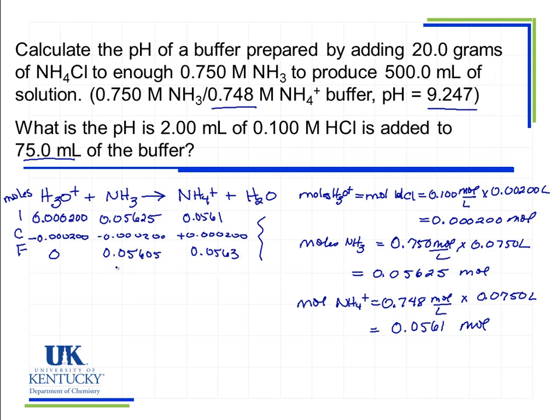Because I have a weak base, ammonia, and its conjugate acid present, I have a buffer, so the Henderson-Hasselbalch equation applies. pH equals pKa, where pKa is the negative log of Ka. Ka is Kw divided by Kb. The Kb was in the previous problem: 1.76 × 10⁻⁵, which is the Kb of ammonia. So I'll divide by 1.76 × 10⁻⁵.